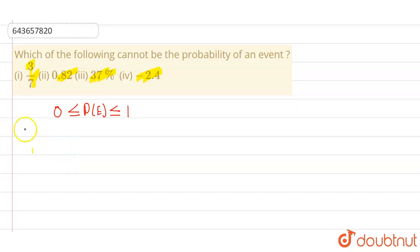As we can see, option 1 is 3 by 7, which means approximately 0.4 something, which lies between the range. So it could be a probability.